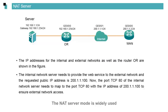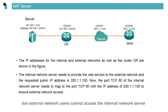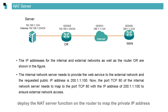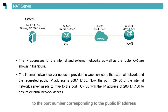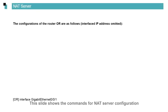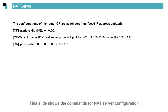The NAT server mode is widely used. For example, an internal network server needs to provide services to the external network, but external network users cannot access it initially. To address this, deploy the NAT server function on the router to map the private IP address to a public IP address, and map a specific port number of the server to the corresponding port number of the public IP address. This slide shows the commands for NAT server configuration.